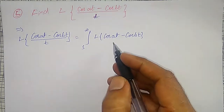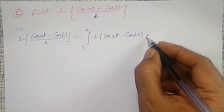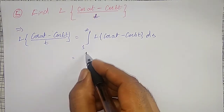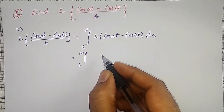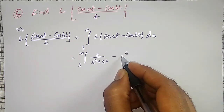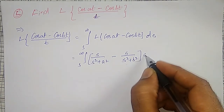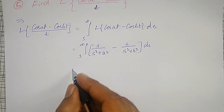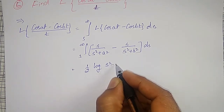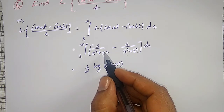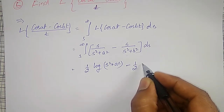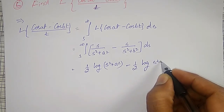We integrate with respect to s because this is going to be a function of s. The Laplace Transform of cos(at) is s divided by s squared plus a squared, minus the Laplace Transform of cos(bt) which is s divided by s squared plus b squared, integrated with respect to s. Integration of s divided by s squared plus a squared is 1/2 times log of s squared plus a squared, minus 1/2 times log of s squared plus b squared.